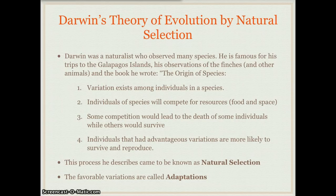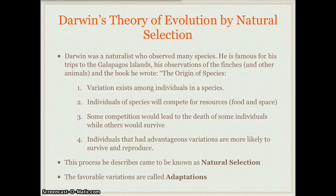The fourth point is that individuals that have advantageous variations — things that are different about them that help them survive — are more likely to survive, and they're going to have more kids and reproduce even more. This theory is called natural selection. Some people call it survival of the fittest, with 'fit' meaning most well adapted to their environment. The favorable variations are called adaptations.